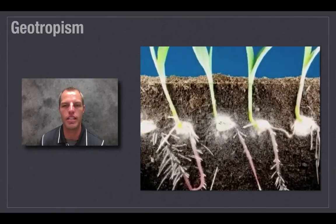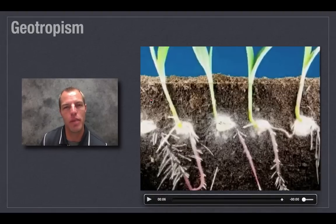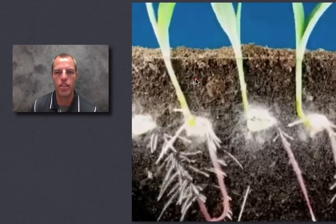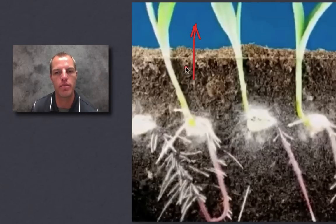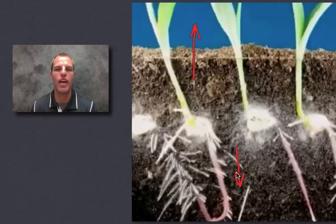We actually have both positive and negative geotropism happening here. The shoot going up is growing against gravity or away from the earth — that's a negative geotropism. The roots growing down towards the earth with gravity — that's a positive geotropism.